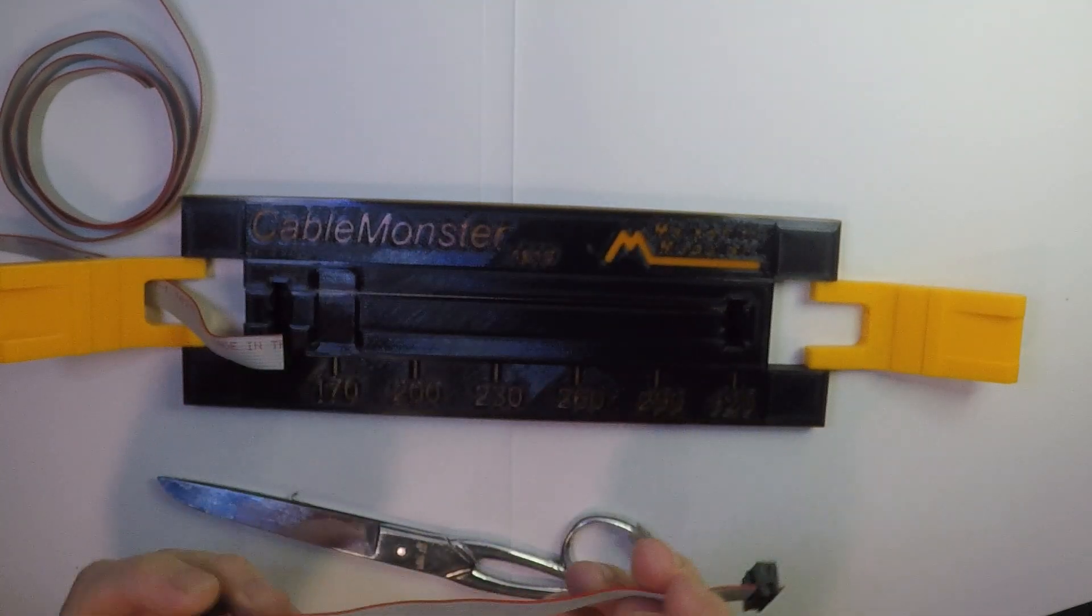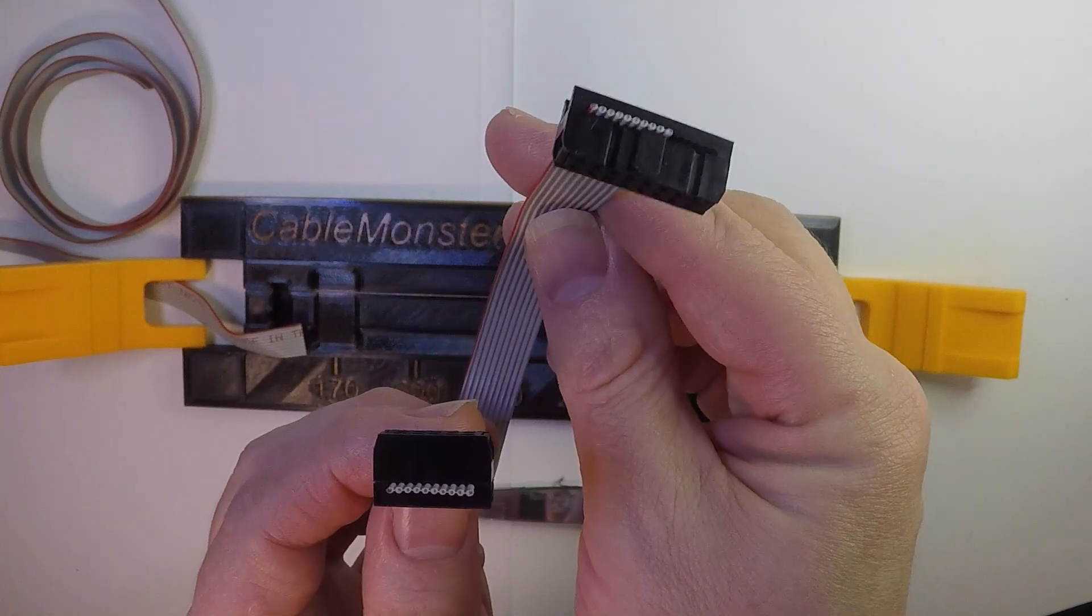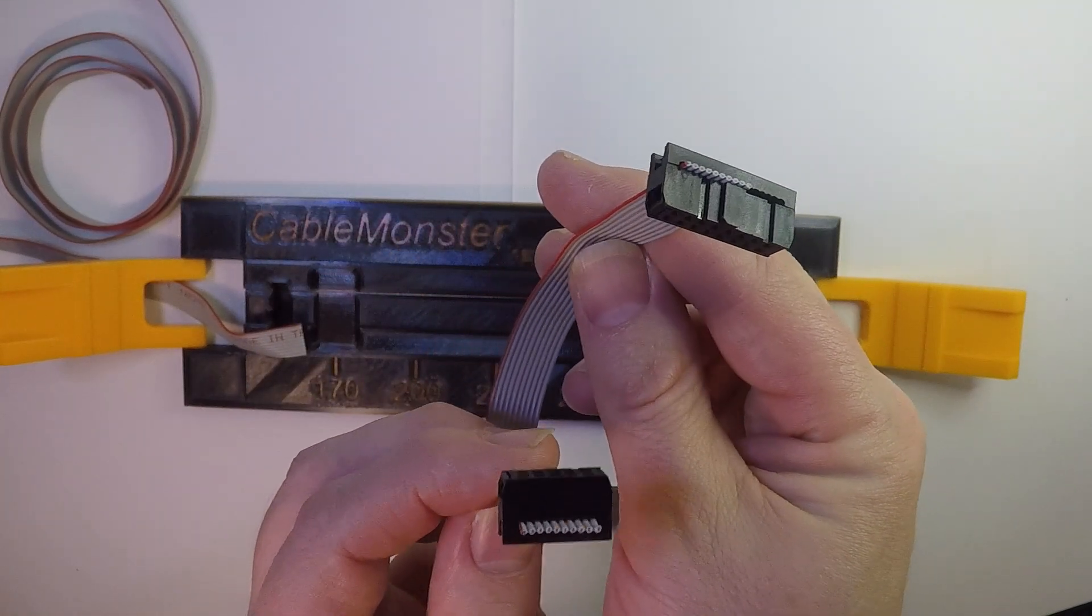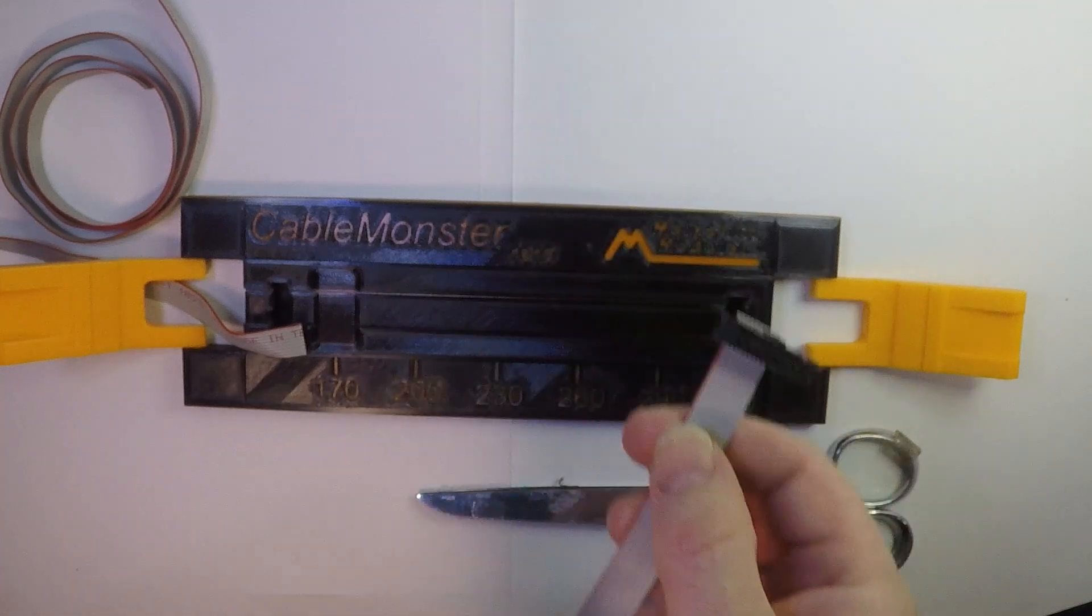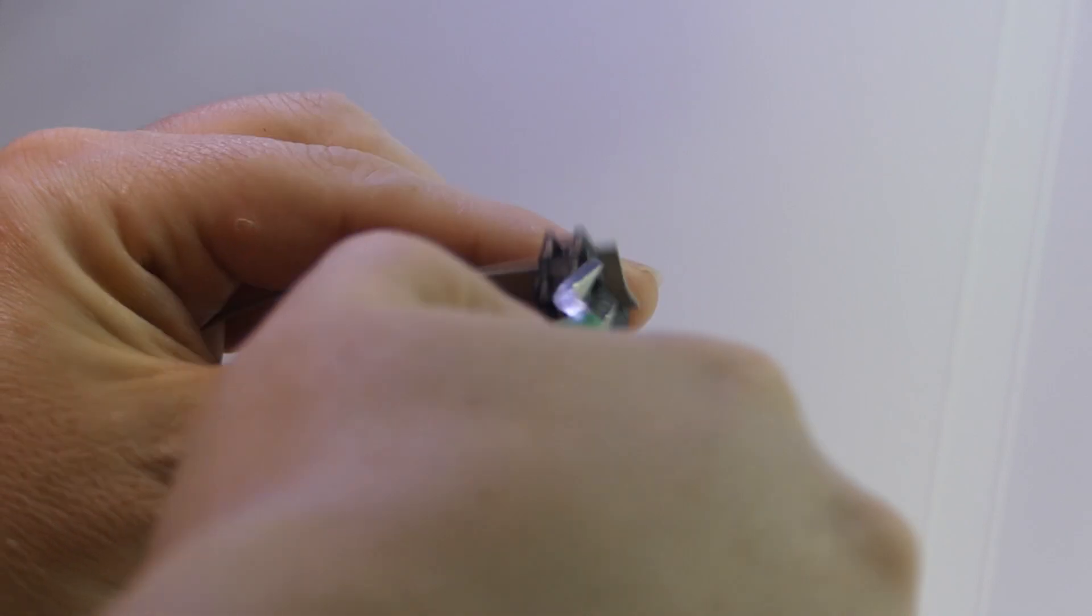Congratulations! You've just made your first power cable. Let's make it a bit nicer. Using a pair of side cutters, cut away the excess ribbon cable.